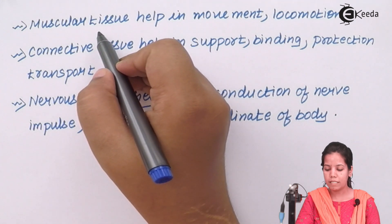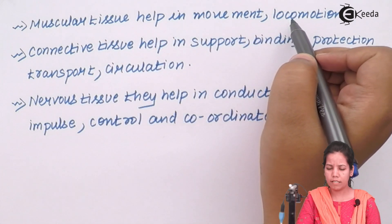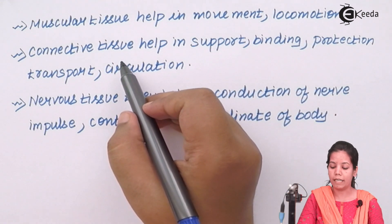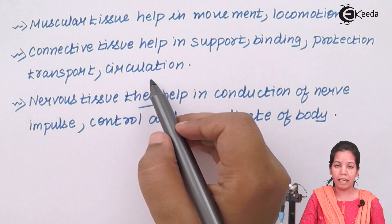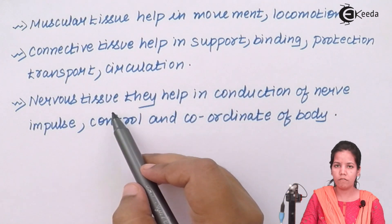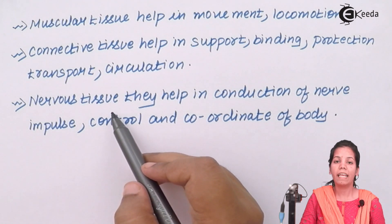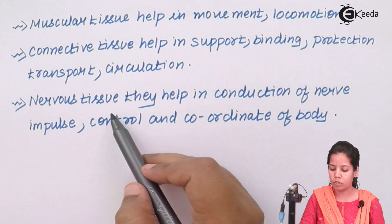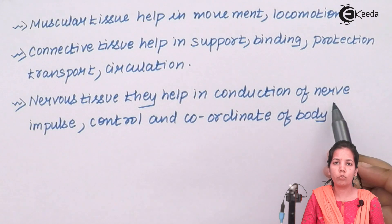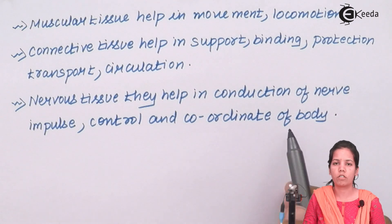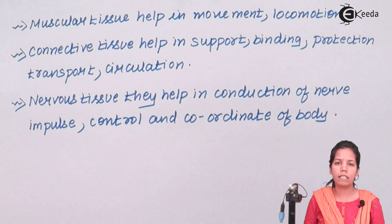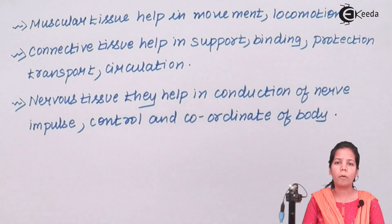Muscular tissue basically helps in movement as well as locomotion. Connective tissue forms the lining of your heart, blood vessels, and capillaries, helping in support, binding, protection, and circulation of lymph, blood, WBCs, RBCs, and platelets — transporting them to various parts of the body. Finally, nervous tissue is the main tissue which helps to conduct information — it channels nerve impulses, transmitting commands given by the brain to different organs, thereby helping to control and coordinate body functions. In this part of the chapter we covered four different types of tissues, where they can be found, and their general functions.